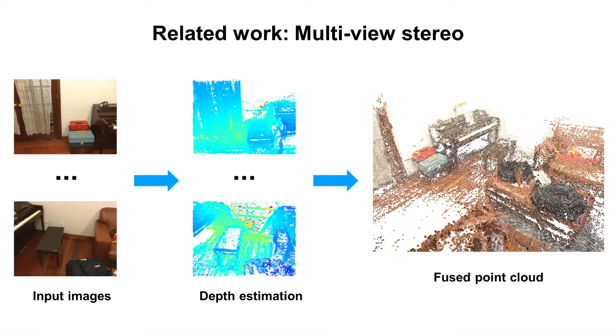Traditional methods mostly adopt multi-view stereo pipeline. Given a set of images, they first estimate per view depth map based on multi-view image matching, and then perform depth fusion in 3D space.